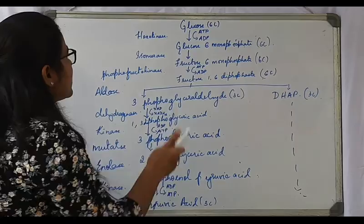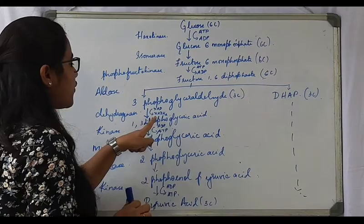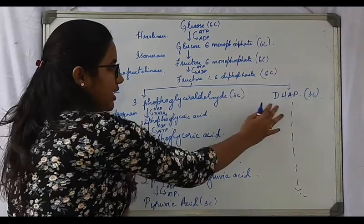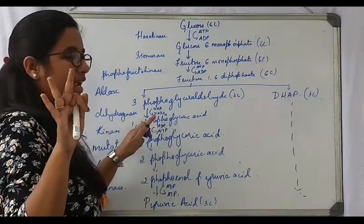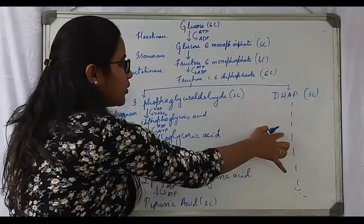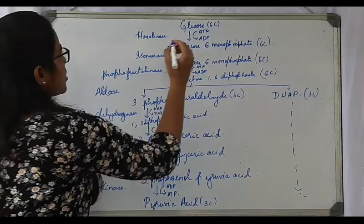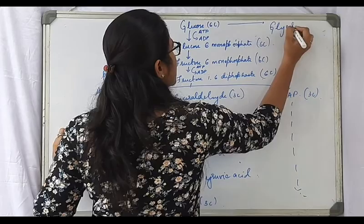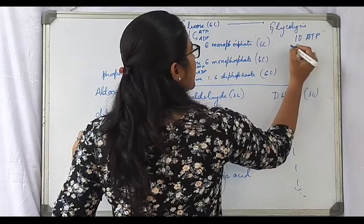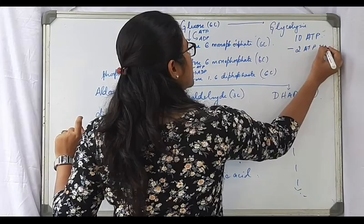Calculating the ATP yield from glycolysis: there is usage of 2 ATP molecules. One NADH2 molecule gives rise to 3 ATP molecules. Two NADH2 from both sides give 6 ATP. Plus 1 ATP, 7; plus 1, 8; plus 1, 9; plus 1, 10. So by the process of glycolysis, 10 ATP molecules are produced, out of which 2 ATP molecules are used. The total net yield is 8 ATP molecules from 1 molecule of glucose.